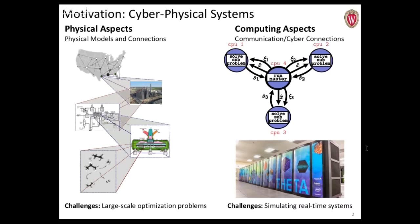These systems are interesting and challenging for a couple of reasons. They have both physical and computing aspects to them. Specifically, those physical aspects usually include lots of component models that are physics-based, and a lot of the complexity comes from the physical topology — for instance, of a network you have lots of physical connections, which are conservation constraints or boundary conditions.